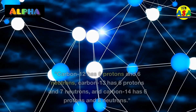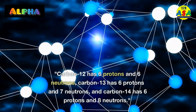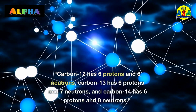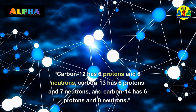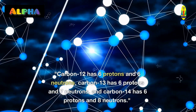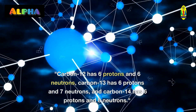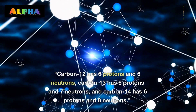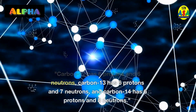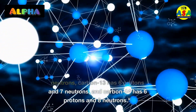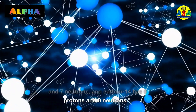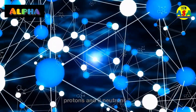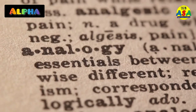Carbon-12 has six protons and six neutrons. Carbon-13 has six protons and seven neutrons, whereas carbon-14 has six protons but eight neutrons.